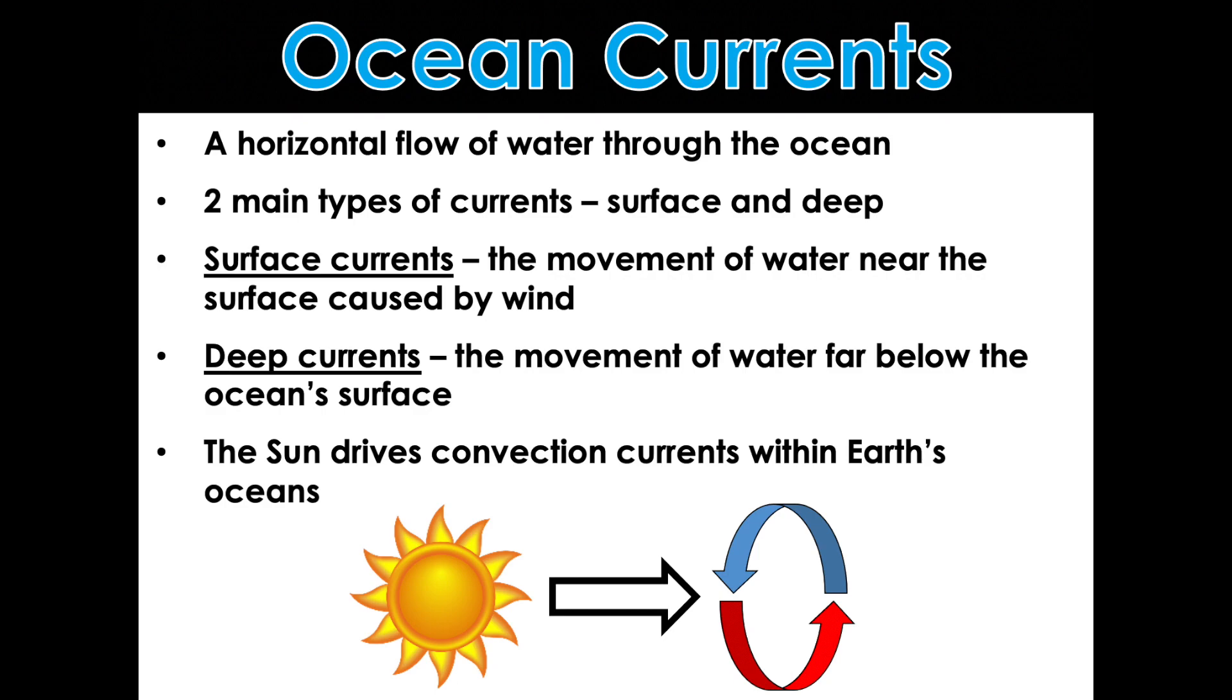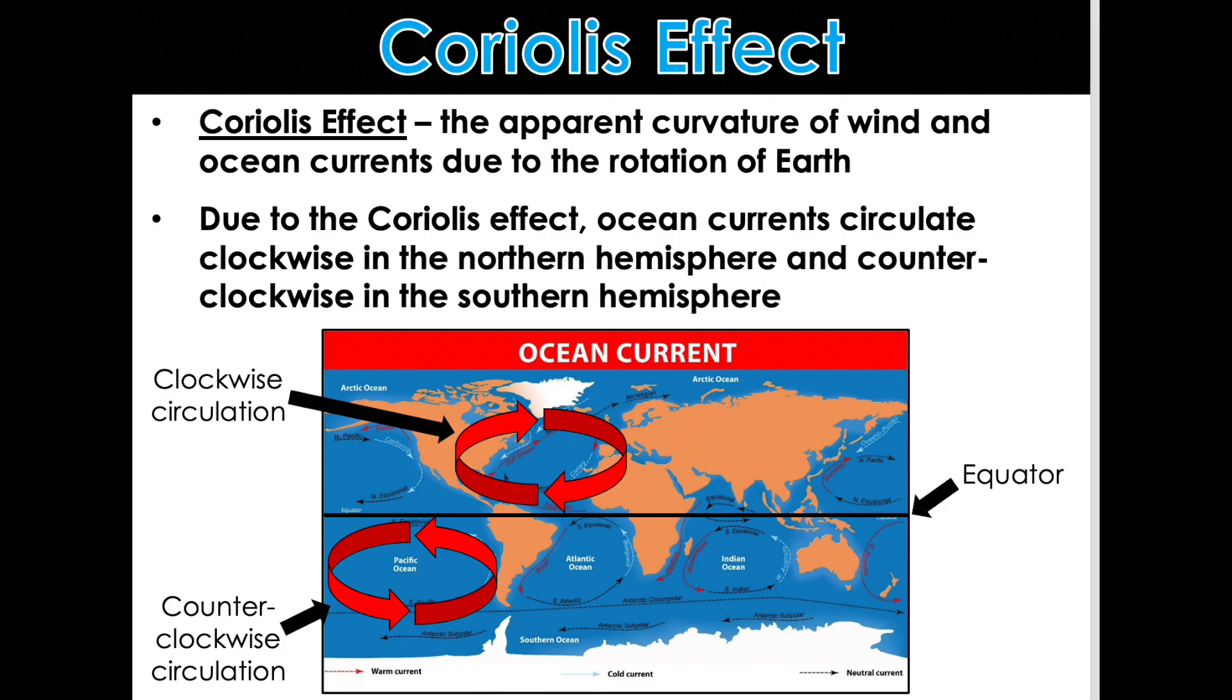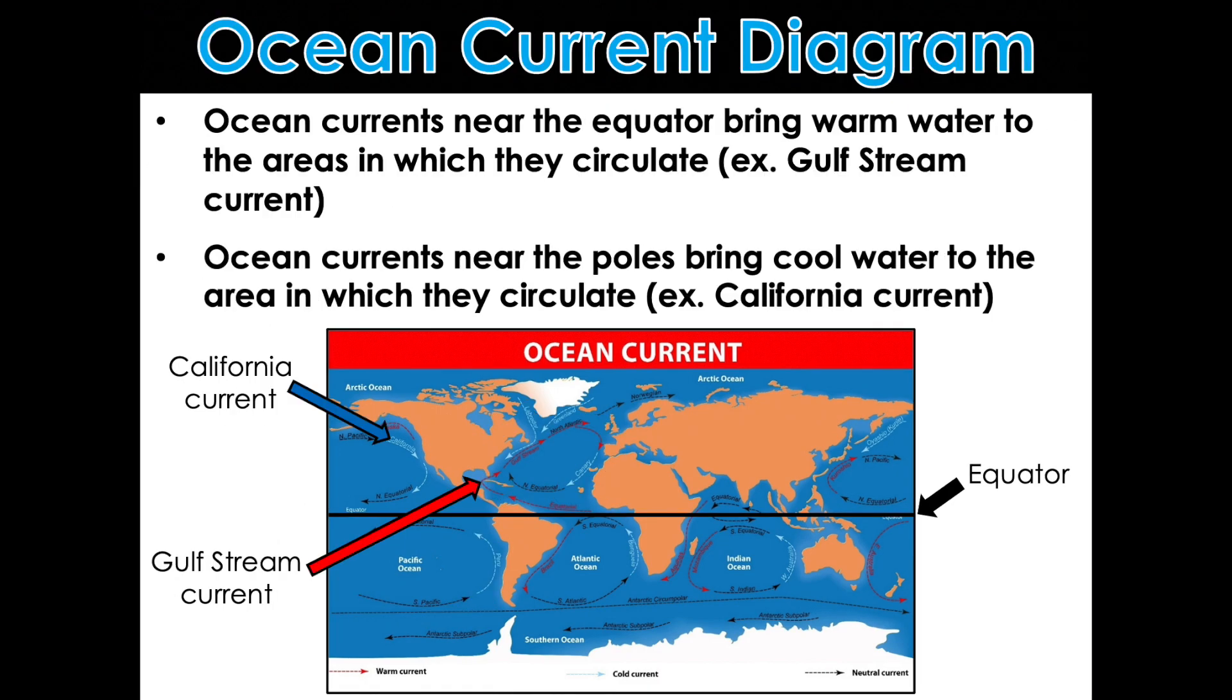The sun drives convection currents within Earth's oceans. Because we know by now that convection is caused by changes in temperature. The Coriolis effect is the apparent curvature of wind and ocean currents due to the rotation of Earth. Due to the Coriolis effect, ocean currents circulate clockwise in the northern hemisphere and counterclockwise in the southern hemisphere. And you kind of need to know that so you understand how the ocean currents are moving, how those different water temperatures are moving from one hemisphere to the other.